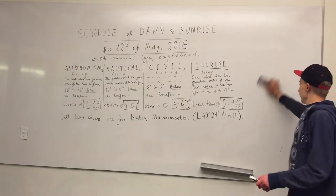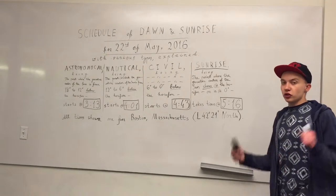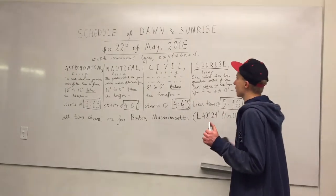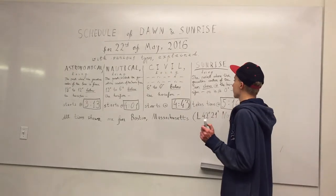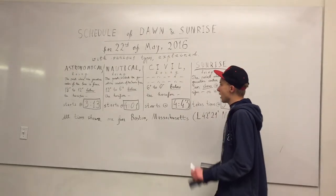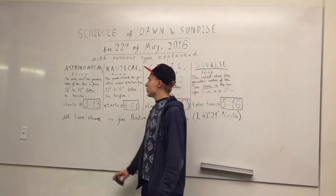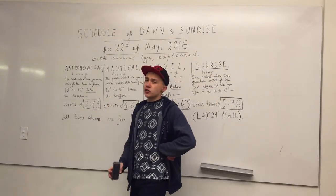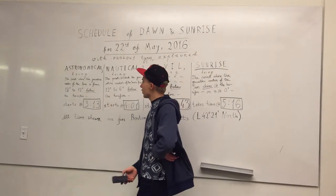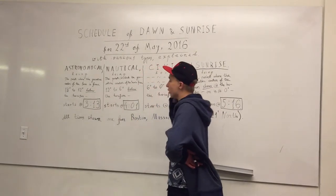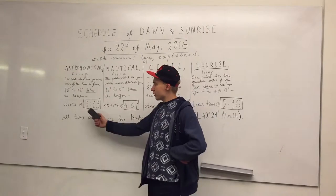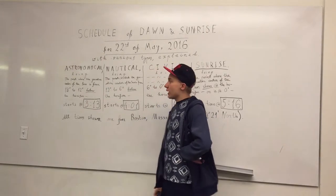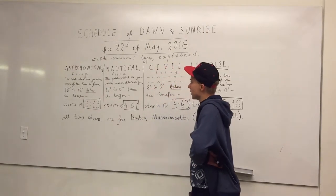Now I'm going to demonstrate those several types of twilights. There is no use in demonstrating astronomical twilight because today it started at 3:13, but it was still at night. Nautical sunrise was at 4:01.